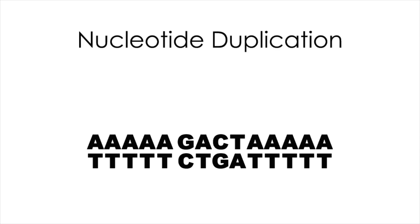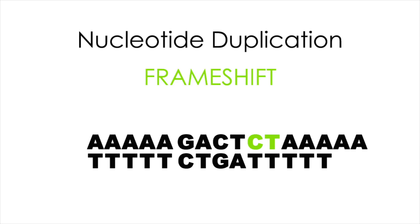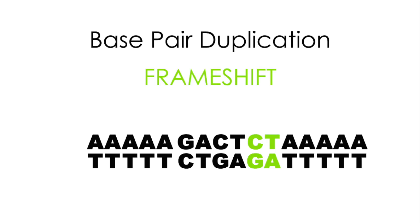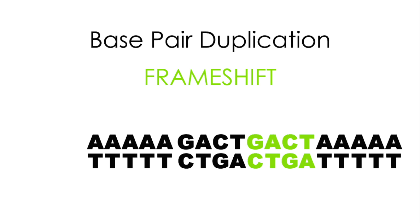A nucleotide duplication is where one or more nucleotides is replicated twice, which will cause a frameshift in that strand of DNA as well as a shift in codon or gene sequences all along the DNA double helix. Base pair duplication is where one or more base pairs are replicated twice during DNA replication, which will definitely cause a frameshift, changing or altering the codon sequences and therefore the gene sequences throughout that entire DNA strand.